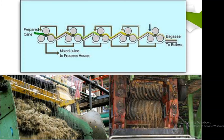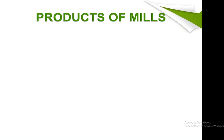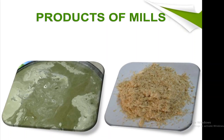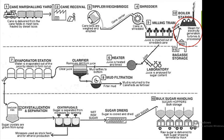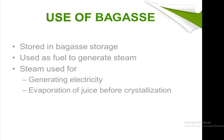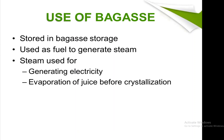Two products are obtained from roller mills: juice, which is in liquid form, and bagasse, which is an extra solid product. Bagasse can be used in the boiler station to produce steam, which is also used for electricity generation. Bagasse is stored in bagasse storage, used as fuel to generate steam, which is then used for generating electricity and for evaporation of juice before crystallization.